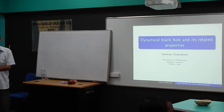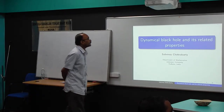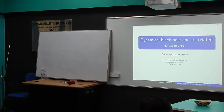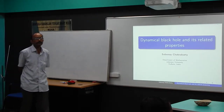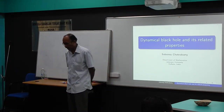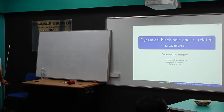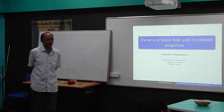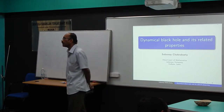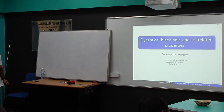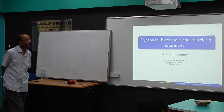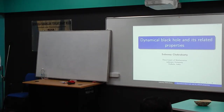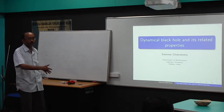I shall talk briefly about the static black hole and then discuss the differences — what the dynamical black hole means. The basic difference is mostly geometrical or mathematical in nature. The static black hole is characterized by the event horizon. I shall mention that the event horizon does not exist in general; it will exist only if the spacetime is asymptotically flat, otherwise it will not exist.